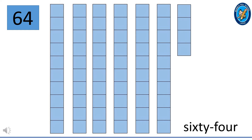This is 64. 6 and 4 make 64. 64 is made up of 6 ten-squared blocks and 4 squares. That means 60 plus 4 is 64. Can you see the number name at the bottom right of your screen?